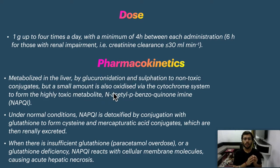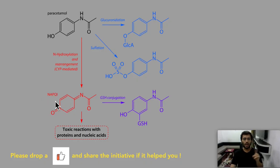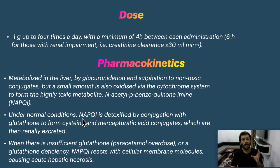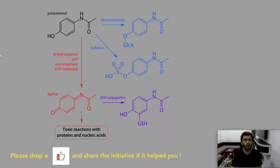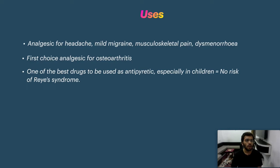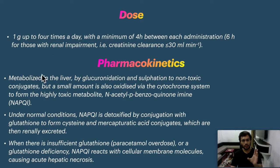A small amount of paracetamol is oxidized via the cytochrome system to form NAPQI. Under normal conditions it is detoxified by glutathione. But when glutathione is insufficient, NAPQI is not metabolized, accumulates, and causes damage. Just know this pathway and the possible mechanisms so you can react accordingly.